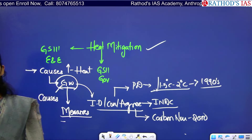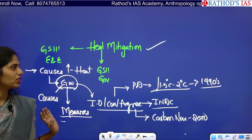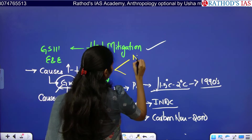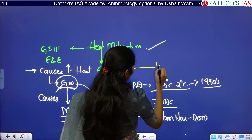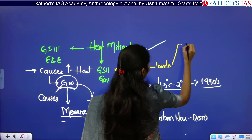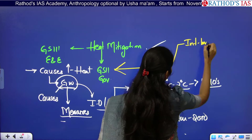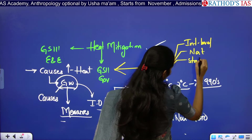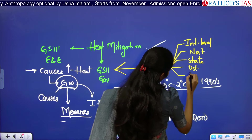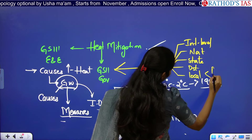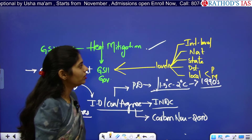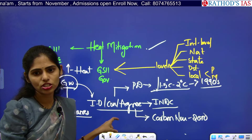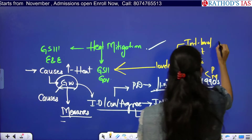From the governance point of view, you need to see different levels: international level, national level, state level, district level, and local level — which includes panchayats and municipalities. You need to think about how the government at all these levels can take measures to control climate change.